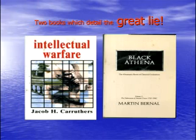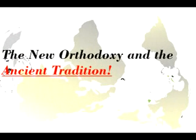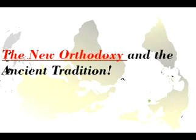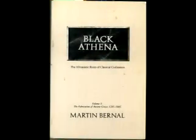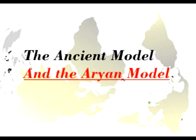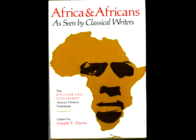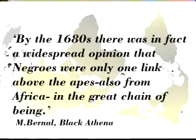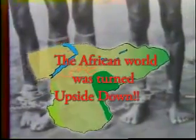This concept is best illustrated in the works of Jacob Crothers and Martin Bernard. Crothers in Intellectual Warfare introduces the old paradigm as the ancient traditions and the new paradigm as the new orthodoxy. Martin Bernard in his two-volume work Black Athena details the two paradigms as the ancient model and the new modern paradigm as the Aryan model. In short, what these two scholars state is that a major change in world historiography was initiated in the 17th and 18th centuries by Europeans to justify the inhumane genocidal treatment of non-European people.